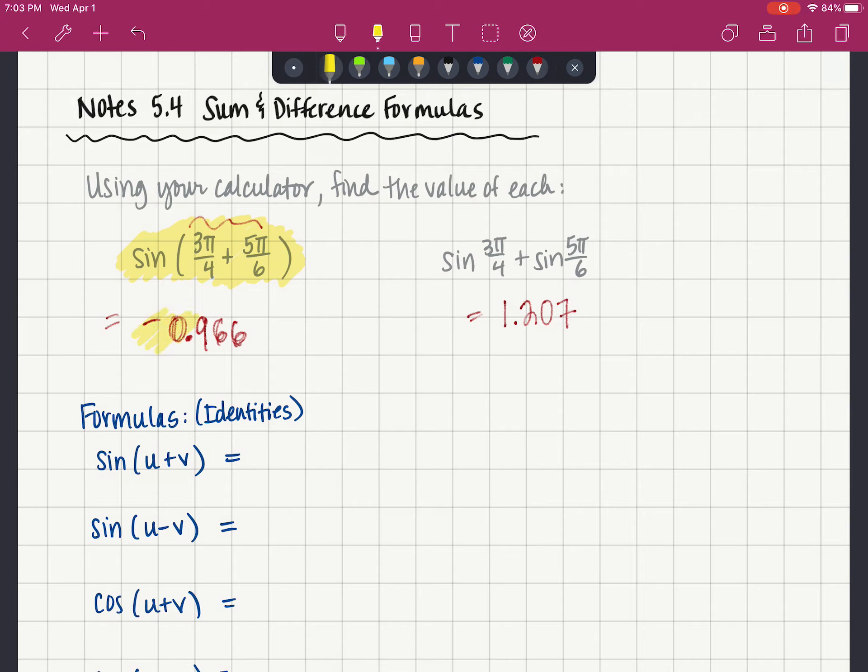So you can see right here, this decimal on the left is not the same as this decimal on the right. Number one, the one on the left is negative and the one on the right is positive. Number two, they're very different numbers, so they're not even additive inverses of one another. These are not the same, they are not equivalent, they are not equal, they are different.